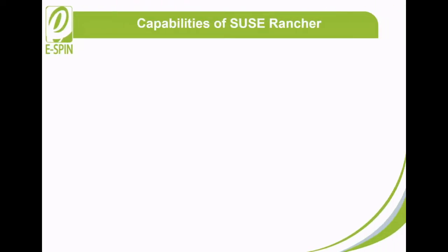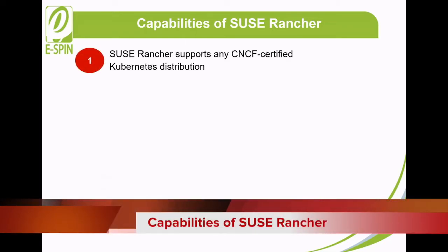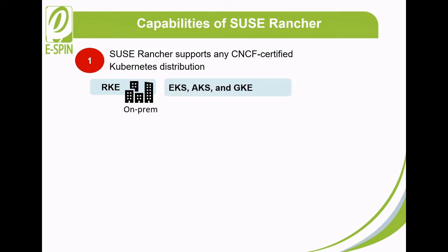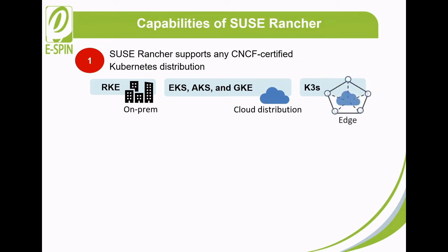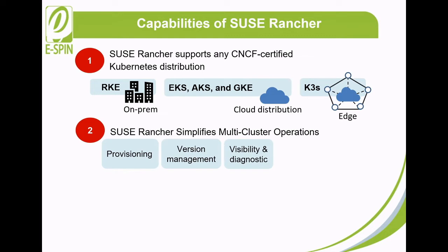Let's look into the capabilities of SUSE Rancher. SUSE Rancher supports any CNCF certified Kubernetes distributions, including Rancher Kubernetes Engine for on-premise workloads, Amazon EKS, Azure Kubernetes Service, and Google Kubernetes Engine for public cloud distributions, as well as Lightweight Kubernetes for edge. SUSE Rancher simplifies multi-cluster operations and offers simple, consistent cluster operations, which include provisioning, version management, visibility and diagnostics, monitoring and alerting, and centralized audits.